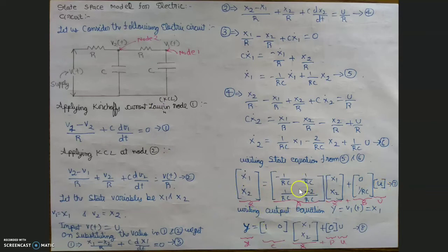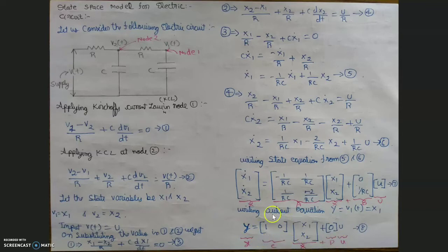These are the parameters that affect the output. State space is not written alone; it is written along with the output equation, which is represented as y equals C times x plus D times u, where C and D are both matrices. This is the output equation representation.